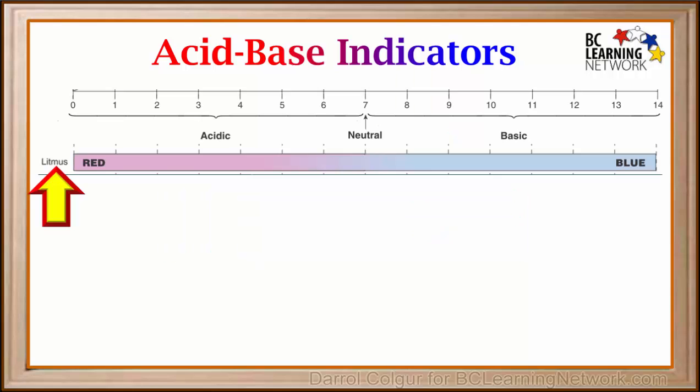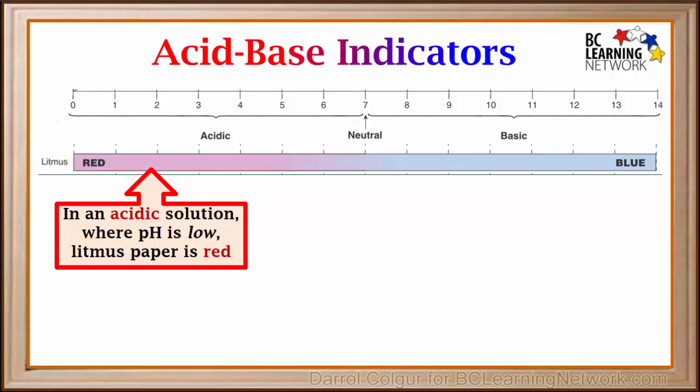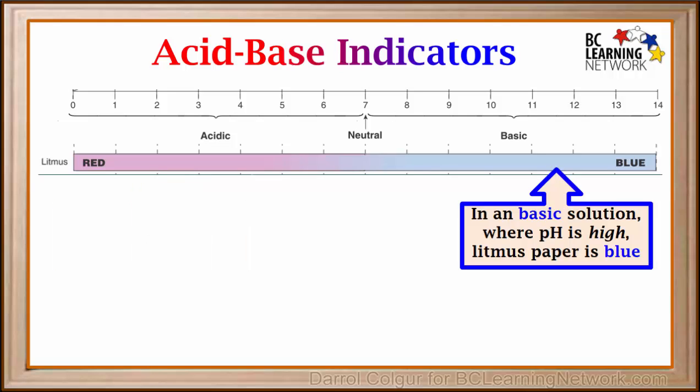One common indicator is litmus paper. In an acidic solution, where pH is low, litmus paper is red. And in a basic solution, where pH is high, litmus paper is blue.